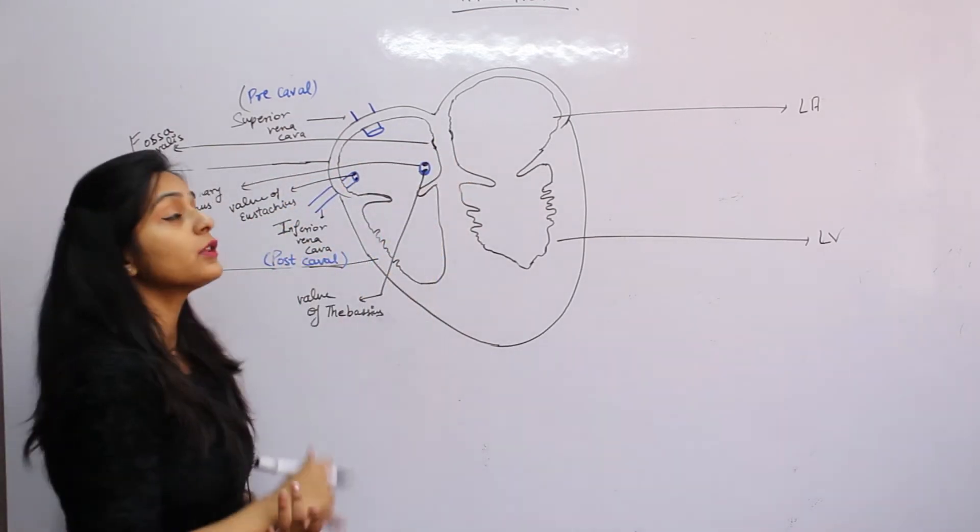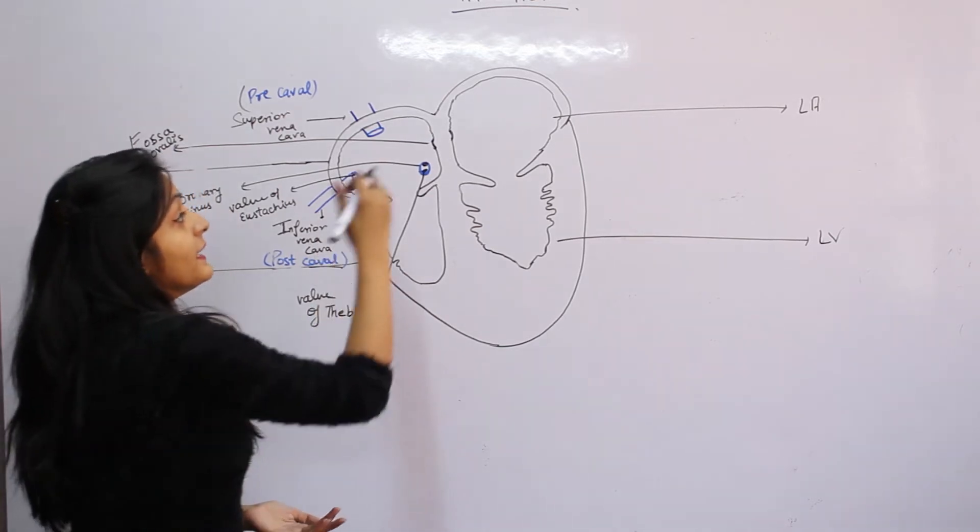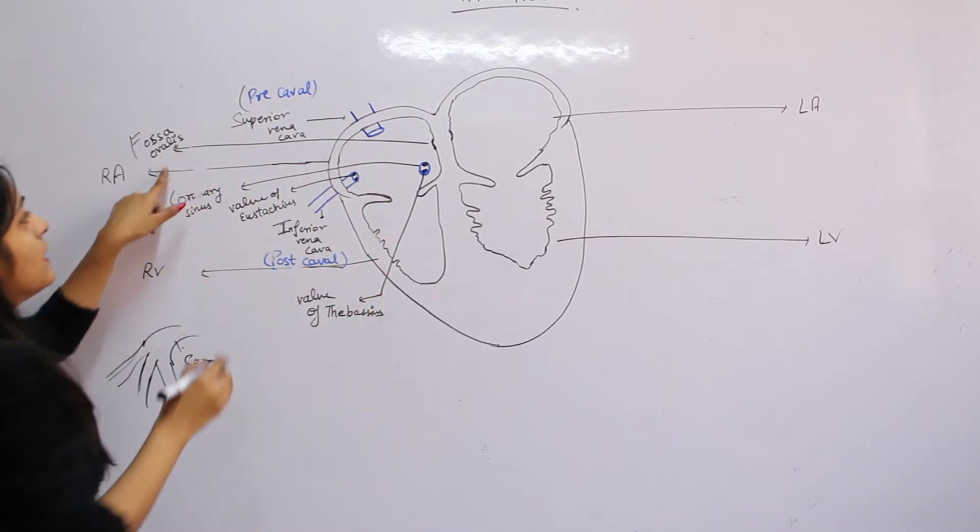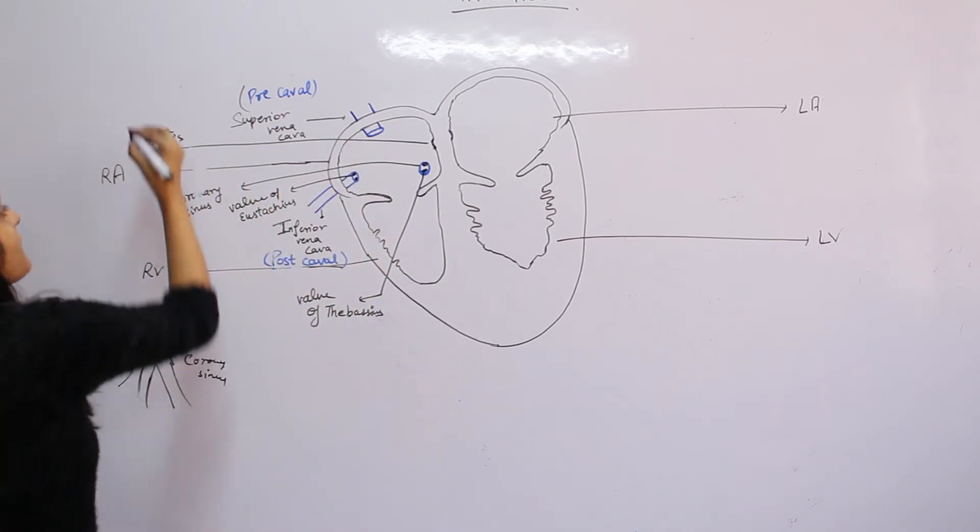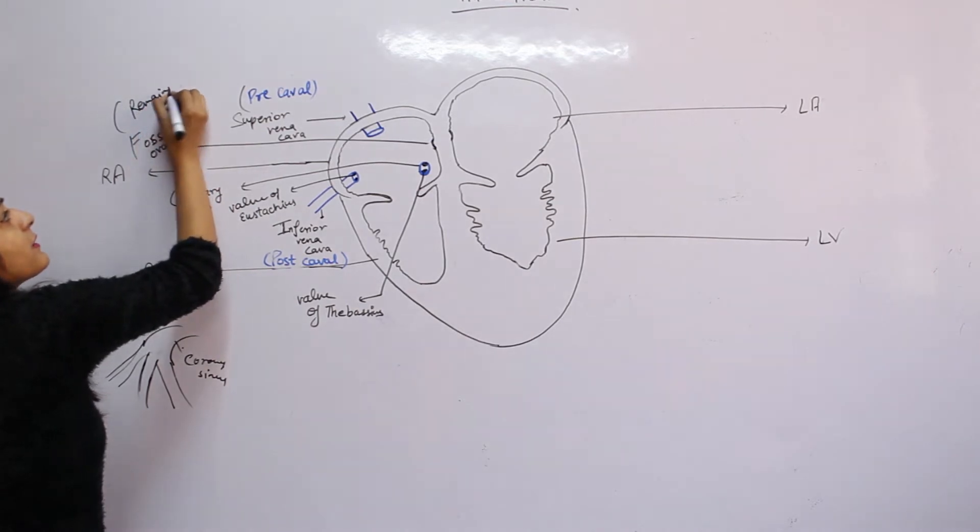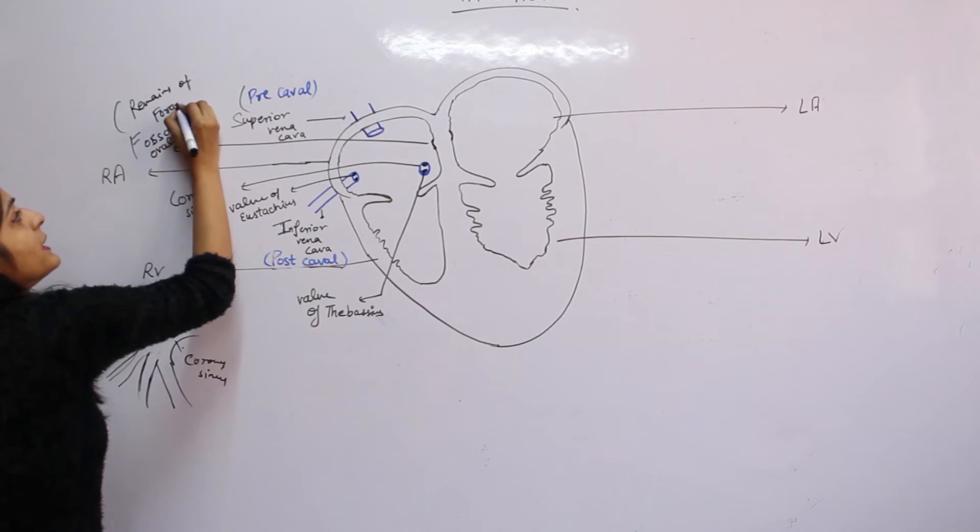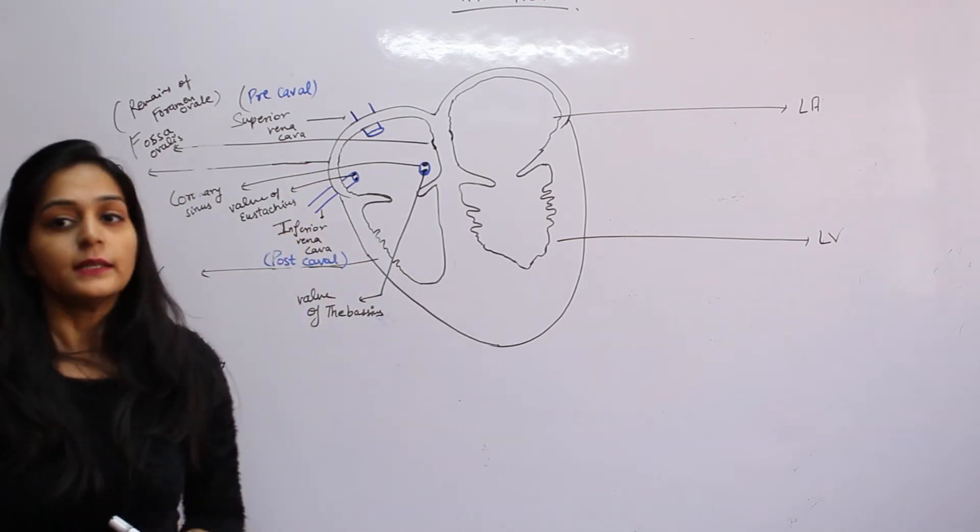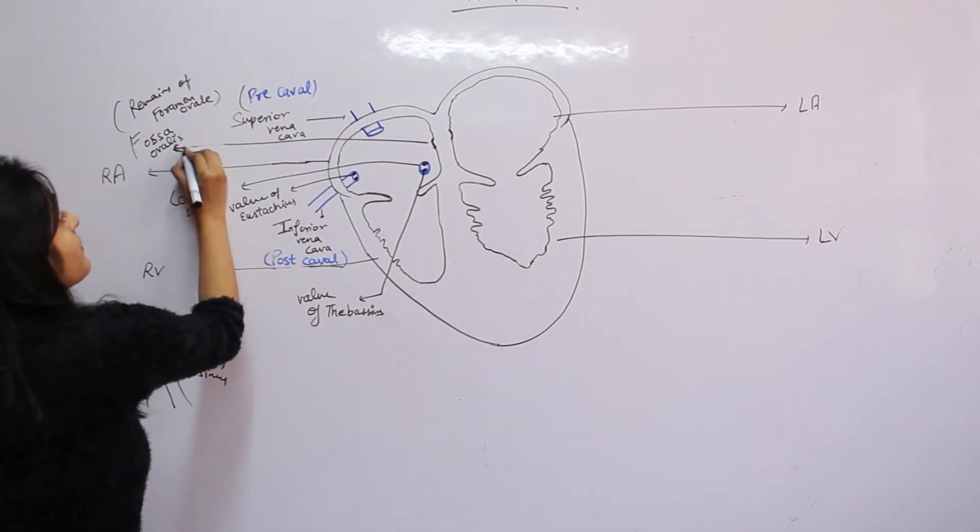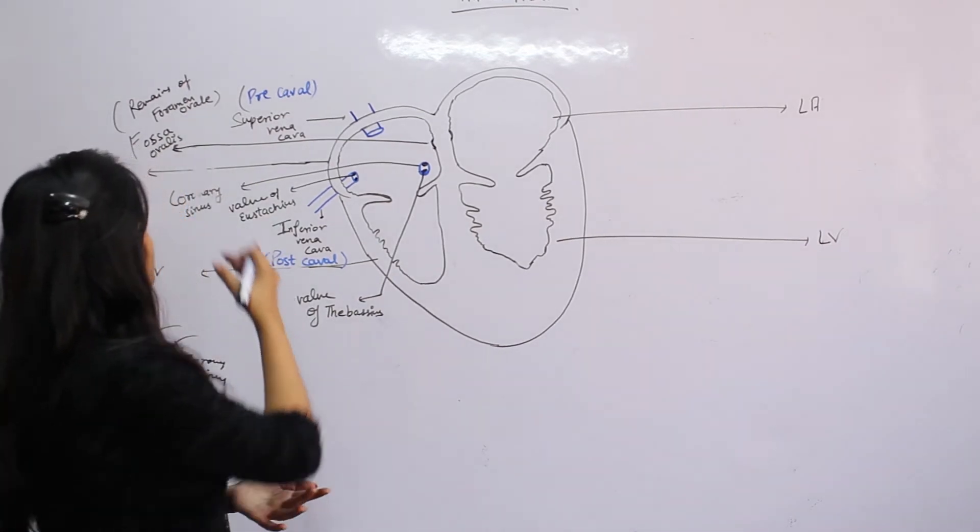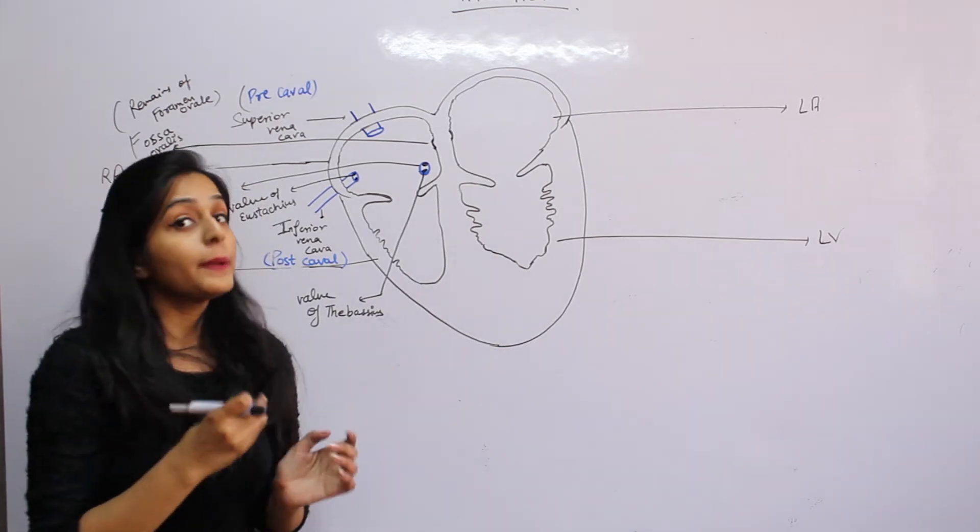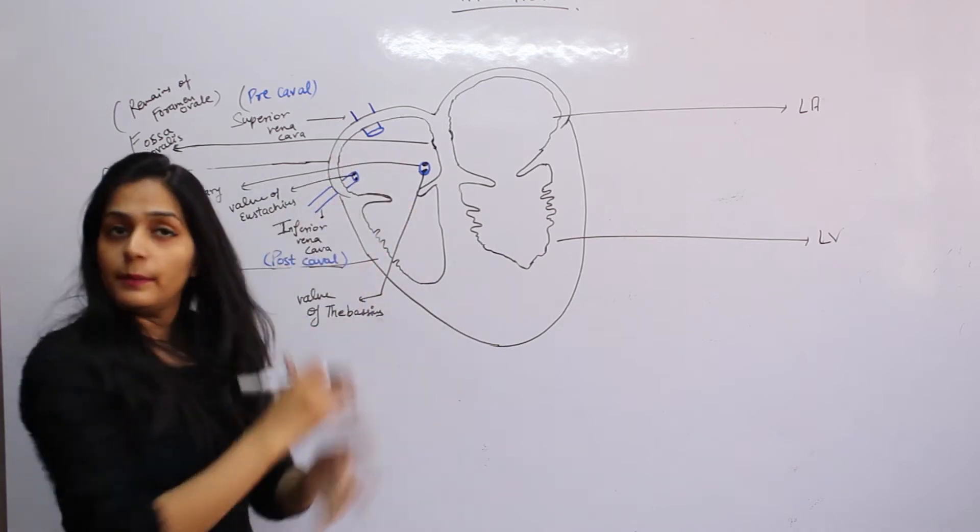Fossa Ovalis is the remnant of foramen ovale from embryonic stage. If it doesn't close, it becomes a hole in the child's heart because blood mixes directly.